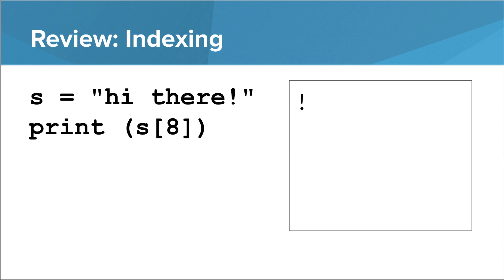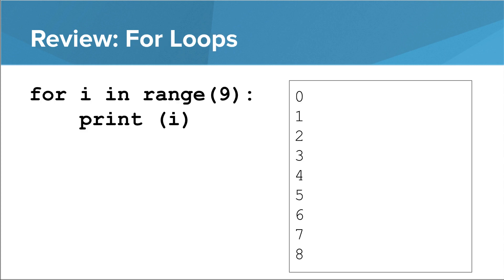Remember, the maximum possible index in a string is one less than the length. In this case, 8 is the highest index we could use. Also, remember that the number in range in a for loop is one more than the highest number that i will reach.